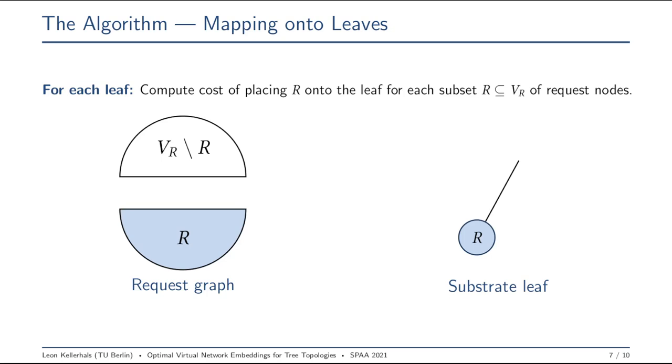For every subset R of request nodes, we check how much it costs to map R onto the leaf. We have two costs. First, the cost of mapping all the nodes onto the leaf. The second cost is to map all of the edges that are between R and the rest of the request graph, and we need to map them onto this edge, because this is the only way to send the capacity along the substrate graph. Of course, for both the node and the edge mappings, we need to ensure that the capacities of the leaf and the edge incident are respected.